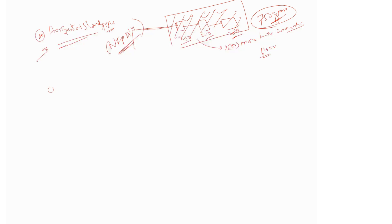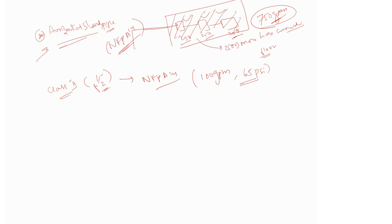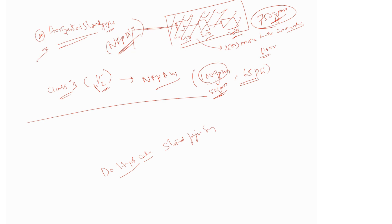One more point related to the Class 2 system: since Class 2 systems, as already told, use 1.5-inch hose valves, as per NFPA 14 we need to have about 100 GPM — or it could be 50 GPM — and the pressure requirement at the remotest hose or hose cabinet will be 65 psi. So now what we are going to do is perform the hydraulic calculations for the standpipe system.